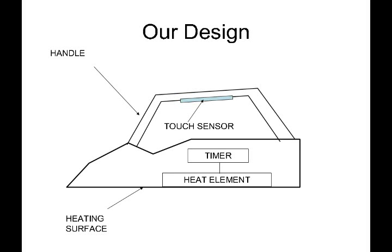The way our design works is we have a touch sensor on the handle of the iron. Internal to the iron is a timer that controls the heating element, which provides heat to the bottom heating surface. When someone lets go of the iron, a 5-minute timer starts. If someone holds onto the iron again, the timer is cancelled. When they let go again, the timer starts counting down from 5 minutes again. If the timer counts down all the way to 0, the iron shuts off.